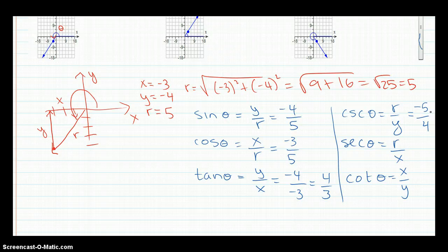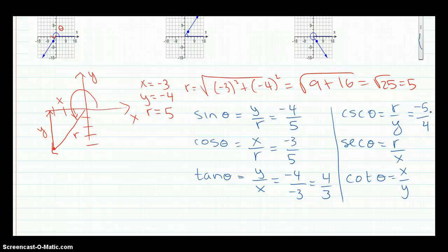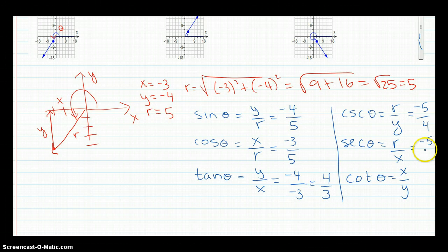It doesn't matter if you put the negative in the numerator or the denominator, so you could have said 5 over negative 4. Or I'm just going to say negative 5 fourths. The same thing here. Negative 5 over 3, right? Flip those. And this would be a flip of the tangent 3 fourths. Hope that helps!